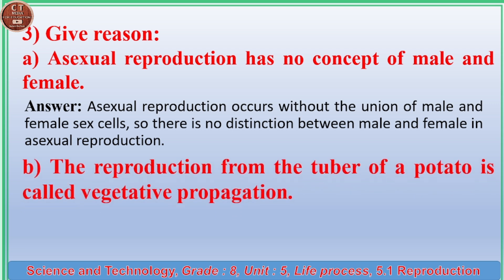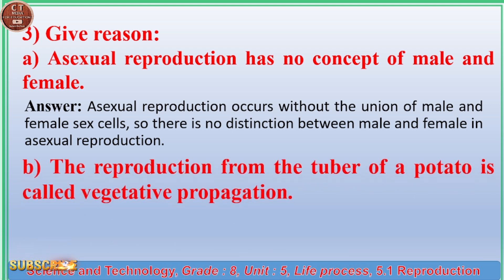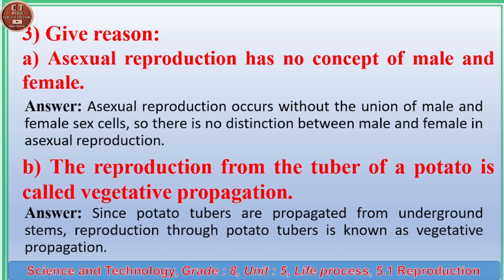(b) The reproduction from the tuber of a potato is called vegetative propagation. Answer: Since potato tubers are propagated from underground stems, reproduction through potato tubers is known as vegetative propagation.